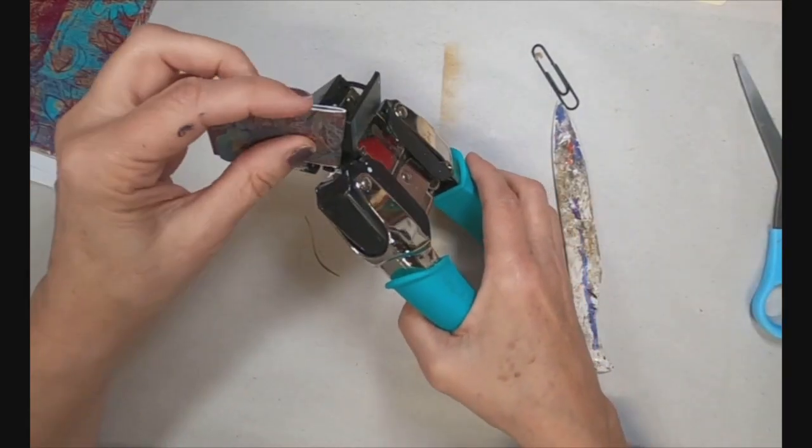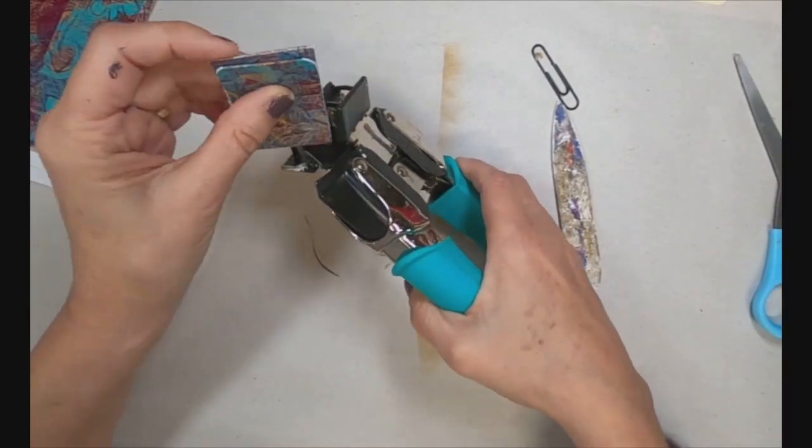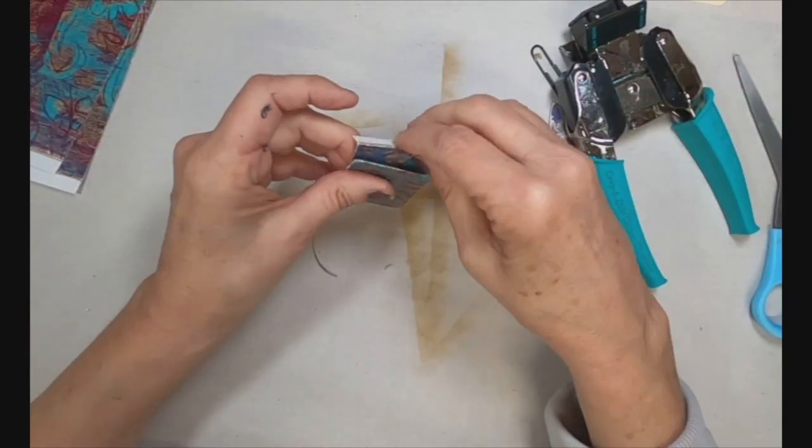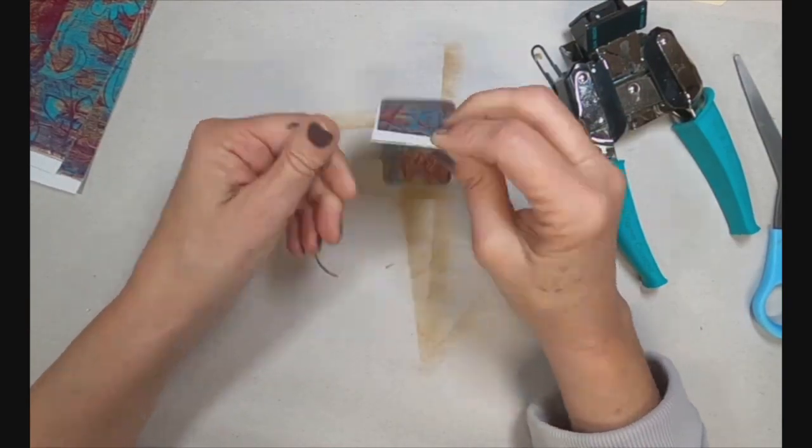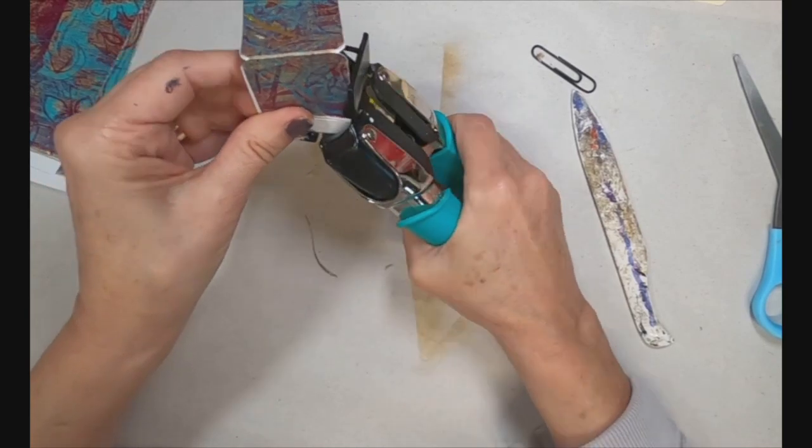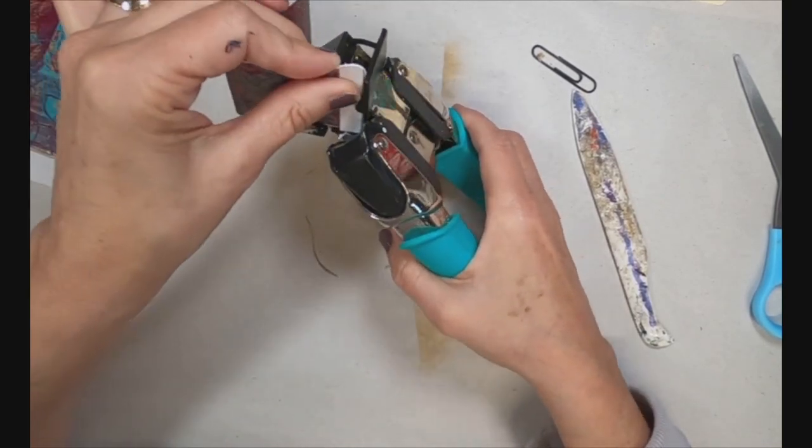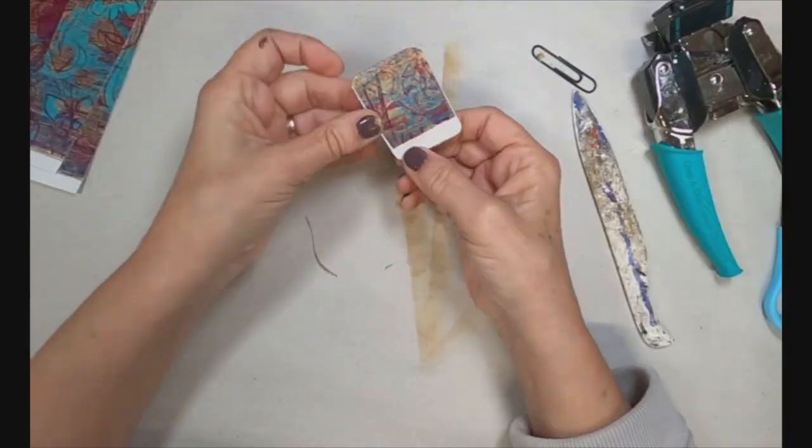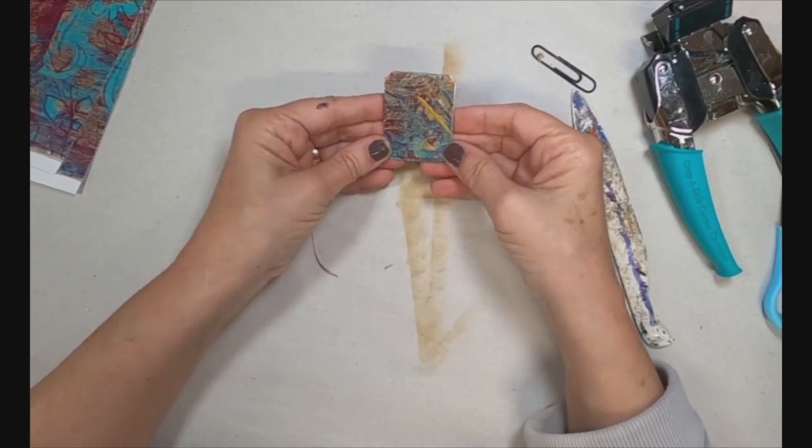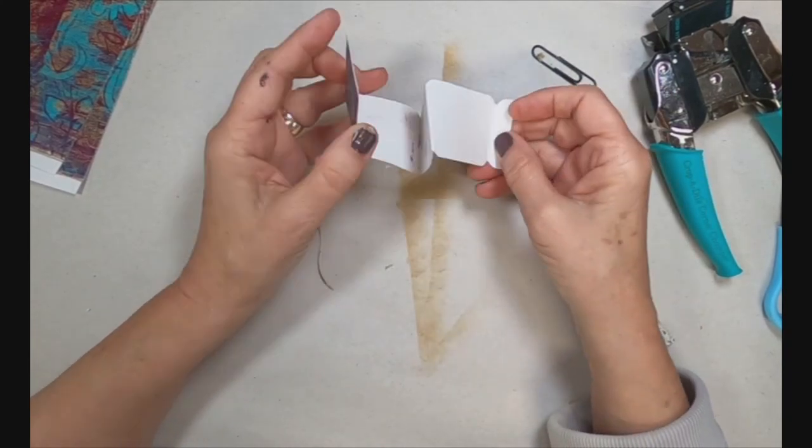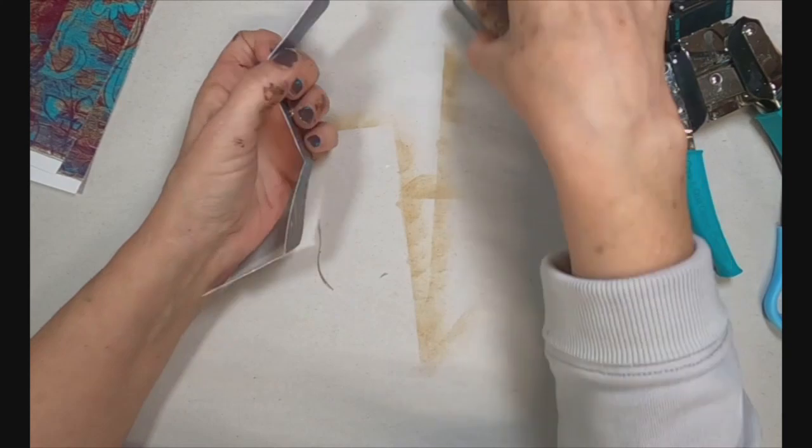So I have my crop a dial out and everywhere there's a corner, I'm going to go ahead and do a one quarter inch cut. And I think that makes it look neater, a little more refined if you will.